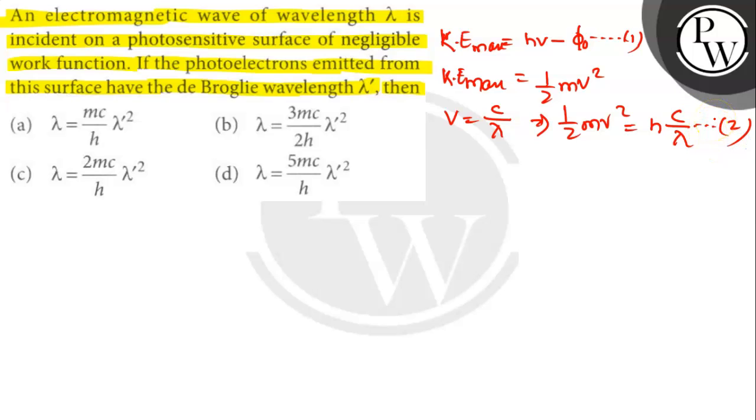Equation 2 becomes p²/2m = hc/λ. This is equation 3. But we know another expression for the momentum of de Broglie wavelength of wavelength λ' as p = h/λ'.